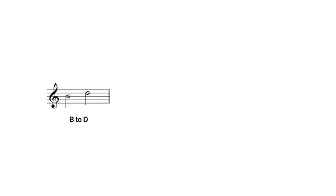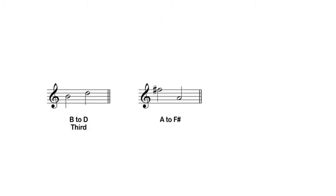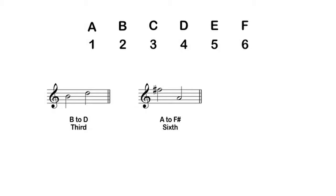For example, if we have a B ascending to a D, we count B as one, C as two, and D as three — so B to D is a third. In the example of F sharp descending to A, we start with the lower pitch: A is one, B is two, C is three, D is four, E is five, and F is six — so F sharp down to A is a sixth.